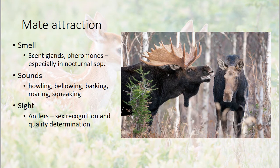Mammals have different strategies for attracting mates. Smell is one, especially in nocturnal species that can't see each other well at night — they use scent glands or pheromones to communicate and attract mates. Sounds are also an important way for mammals to find mates, whether it be howling, bellowing, barking, roaring, or squeaking.